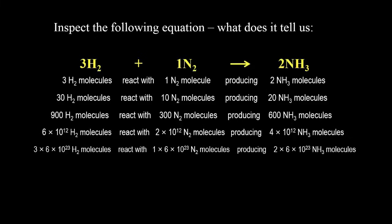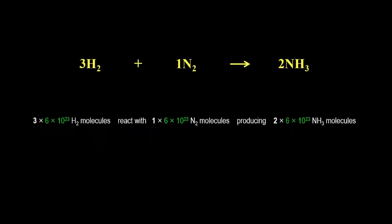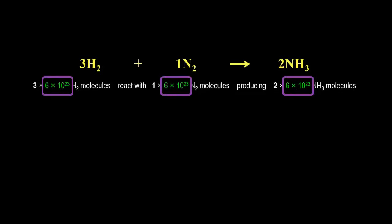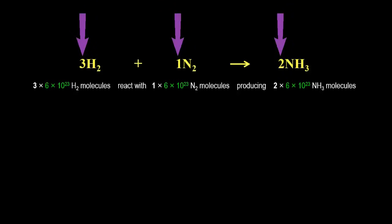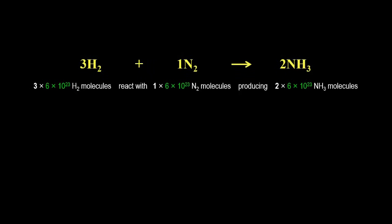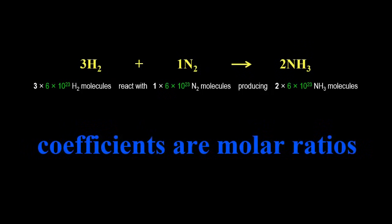Now we can see how this all connects to molar amounts of particles. The coefficients are molar ratios — we have three moles of hydrogen molecules reacting with one mole of nitrogen molecules, and that produces two moles of ammonia molecules. The coefficients, being ratios, can represent any amounts including molar amounts. And because we use such large amounts of particles on the level of molar amounts, we use the coefficients as molar ratios.